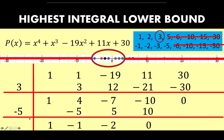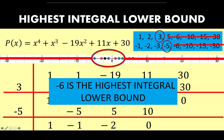Let's try negative 5. Using negative 5 in synthetic division, the remainder is 0, which means negative 5 is one of the roots. We still need 2 more roots. Remember from Descartes' rule of signs we expect either 2 positive or 0 positive, and either 2 negative or 0 negative — not 1 of each. We are looking for that other positive root and that other negative root. Also, since negative 5 is a root and negative 6 is a lower bound, negative 6 must be the highest integral lower bound — there is no number greater than negative 6 that can be a lower bound.